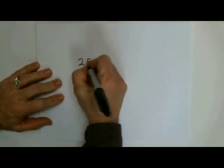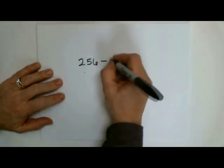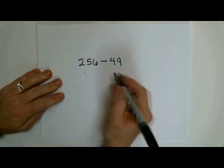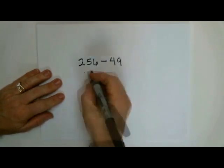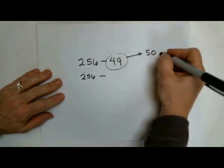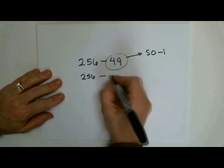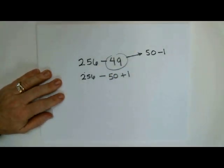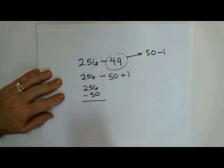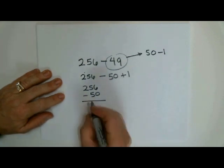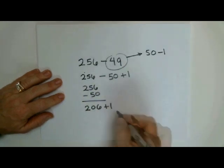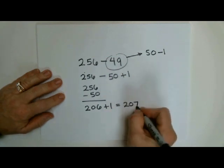If I ask you, what's 256 minus 49? What would you say? Well, it's kind of a hard subtraction problem. I mean, there's carries involved, and so let's see if we can make it an easy addition problem. So I've got 256 minus 49 is really close to 50, right? It's 50 minus 1. So we're going to say minus 50 plus 1. Okay. So what's 256 minus 50? Can you do that quickly? Yeah. Did you get 206 plus 1? So you should get 207.